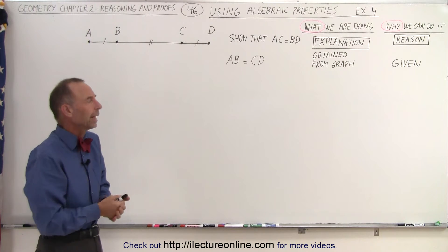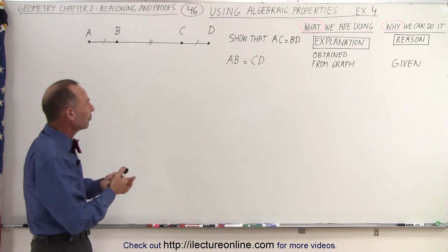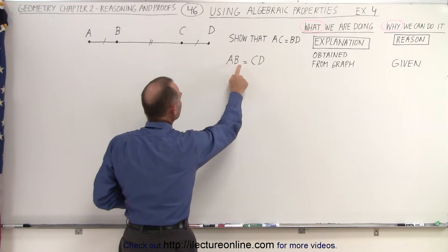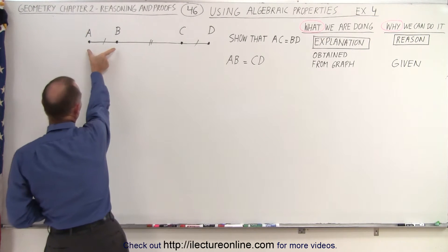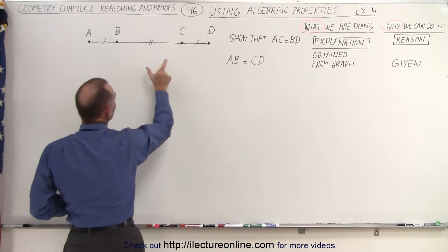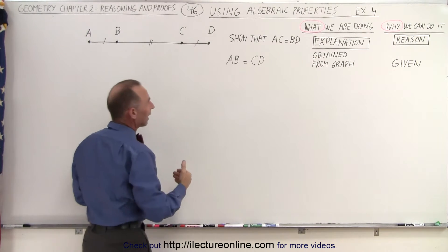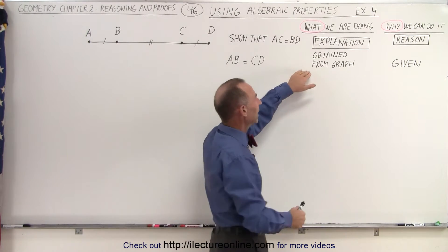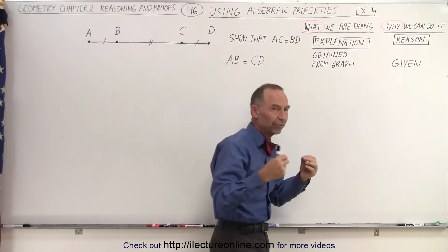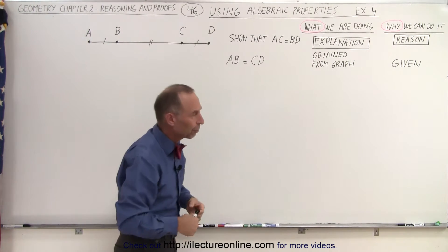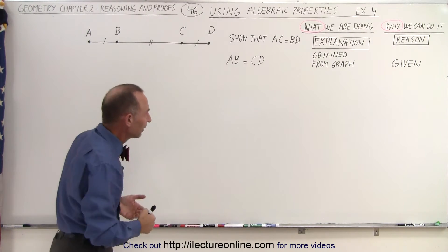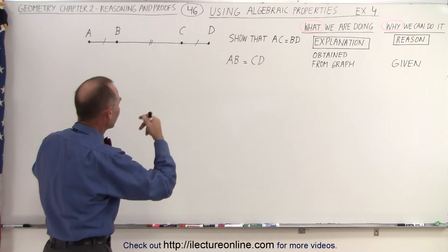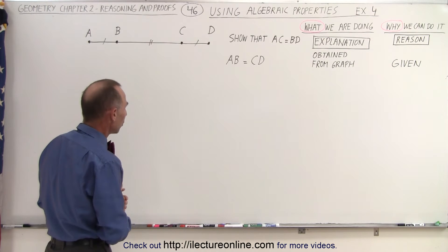So how do we go about doing that? Well, first of all, we establish that AB equals CD — that the length from A to B is equal to the length from C to D. That's obtained from the graph, and that's a given. We can start from that as a premise — we don't have to worry about proving that; it's simply a given quantity.